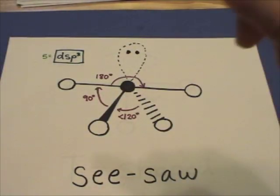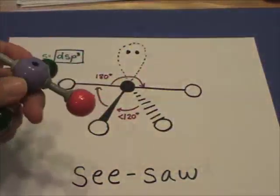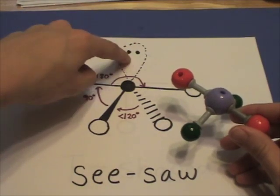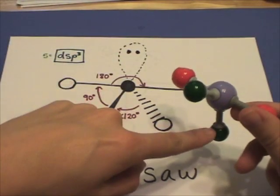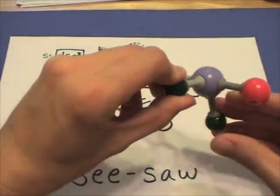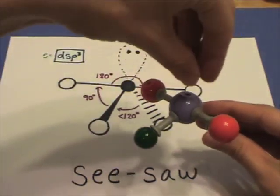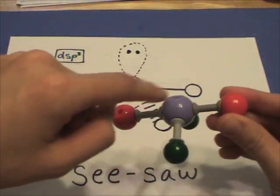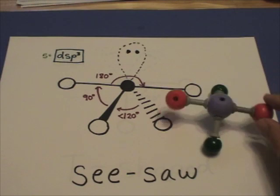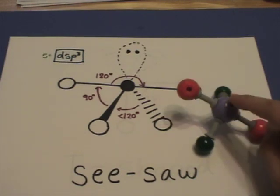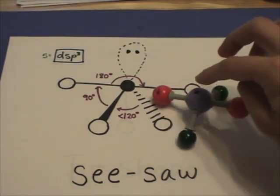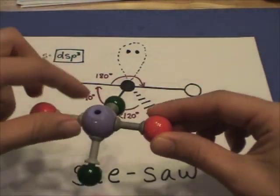If one of the sigma bonds is replaced by a lone pair of electrons, the lone pair goes to the equatorial position. We have the expected approximately 120 degrees — maybe slightly less because the lone pair takes up a little more space — and approximately 180 degrees. We call this a seesaw, with a dsp3 hybridized central atom having four sigma bonds and one lone pair.